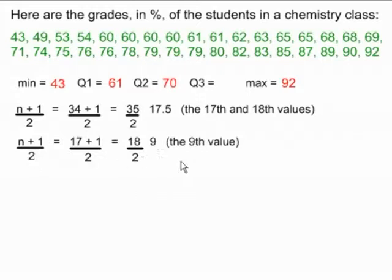We can use the same formula over again to find the median of the second half of the data, which is this bottom line. It's still 17 values, and 17 plus 1 over 2 still gives us 18 over 2, the 9th value. So counting, this last of the 79's is our 9th value. Q3 is therefore 79.